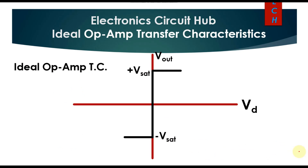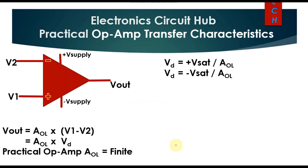This is the transfer characteristic of an ideal op-amp. You can see here: whenever your Vd is greater than zero, you will have output Vout equals +Vsat, and whenever your input voltage is less than zero, your output is -Vsat.